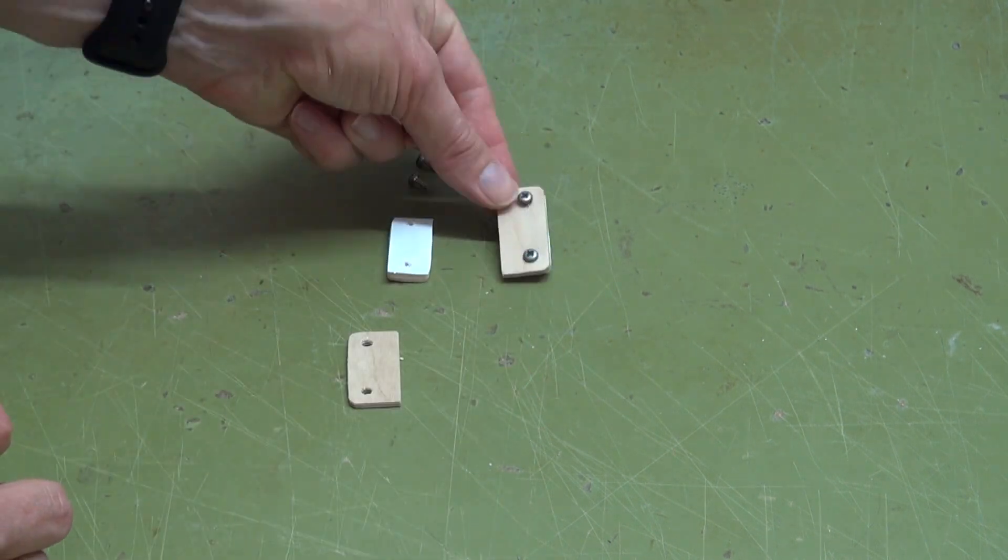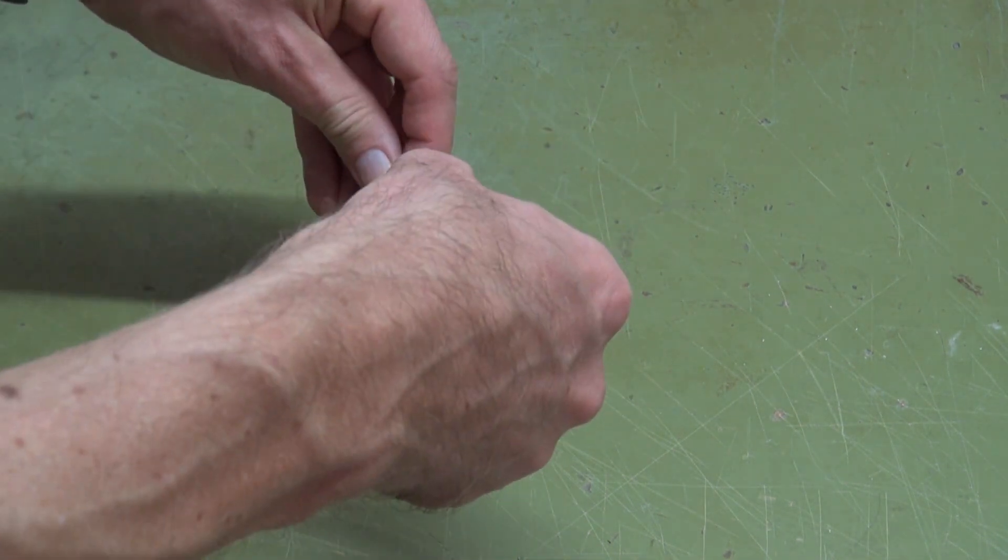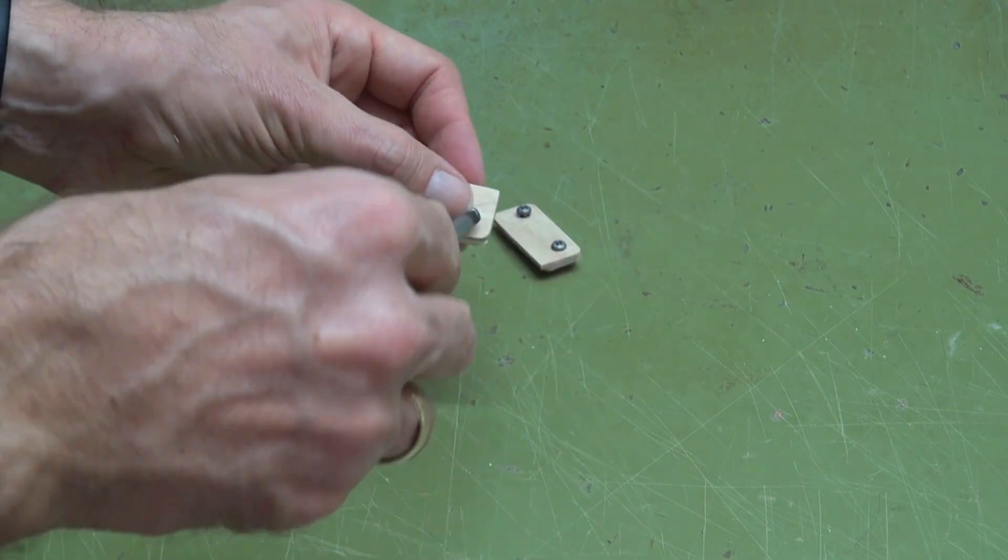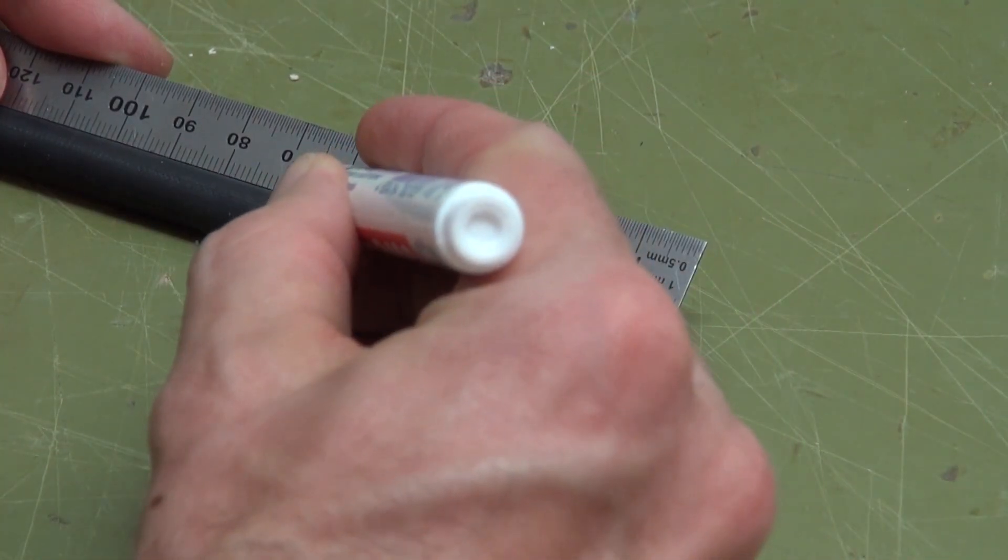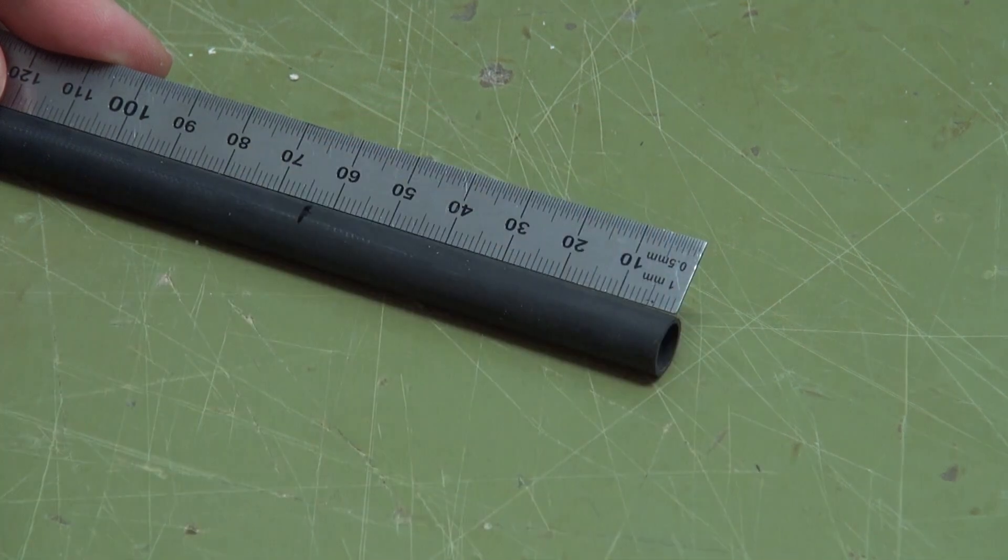Be careful, the mounting base is asymmetrical. Check the plan for the right orientation. Mark the position of the rear edge of the wings on the carbon fiber tube at 63 millimeters.